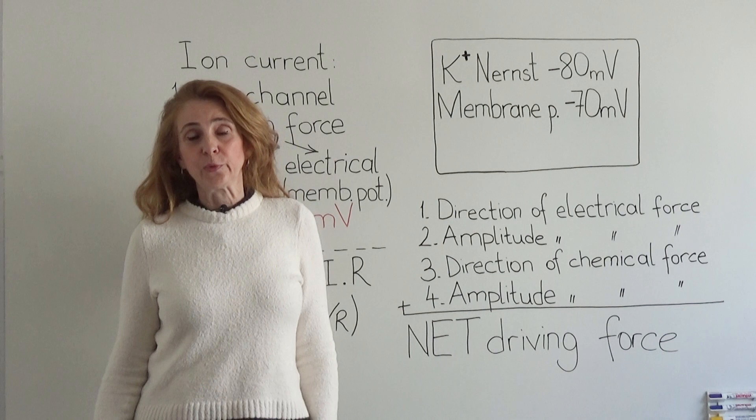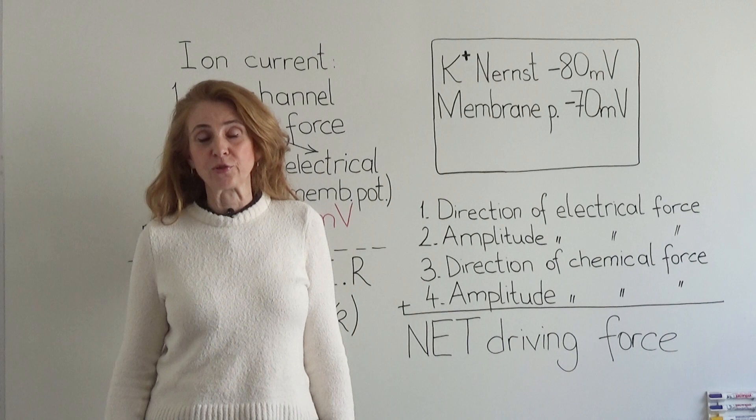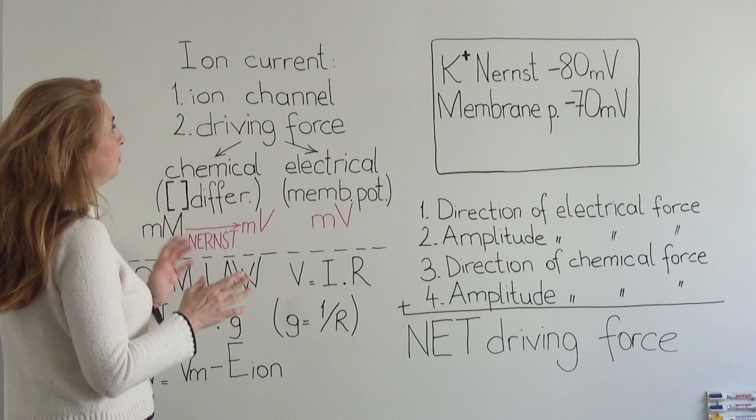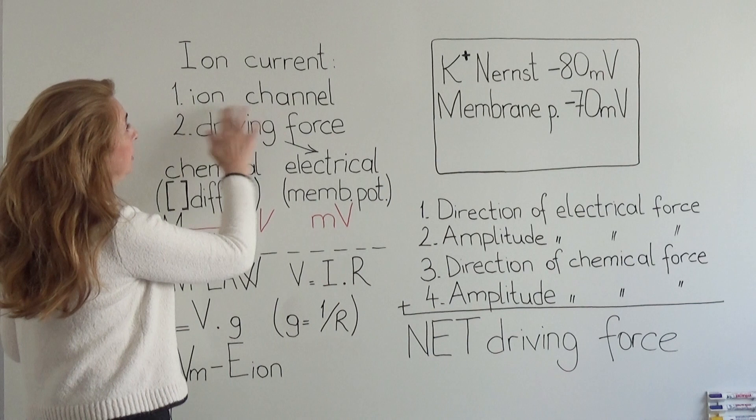We know that ions must move into or out of the cell to change and produce the membrane potentials. This is called an ion current. To have an ion current or an ion movement into or out of the cell, two conditions must be provided at the same time.